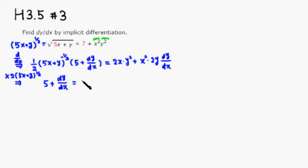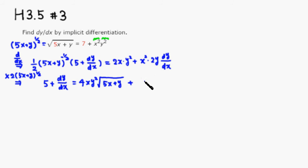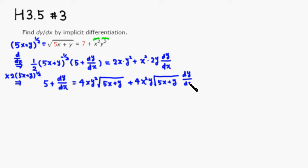On the right-hand side, multiplying out: 2 times 2 is 4, giving 4xy² times the square root of (5x + y). Then 4 again, times x²y times the square root of (5x + y), times dy/dx.